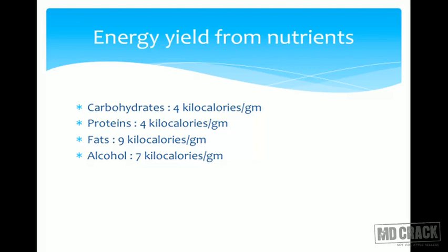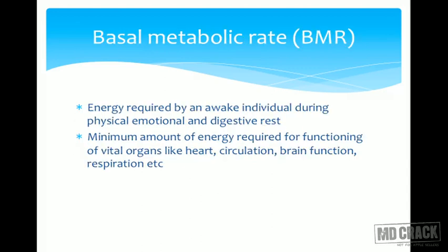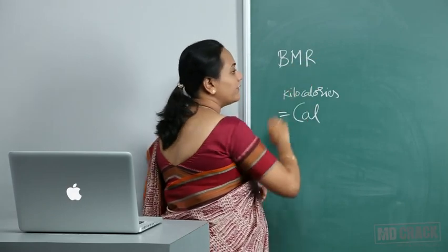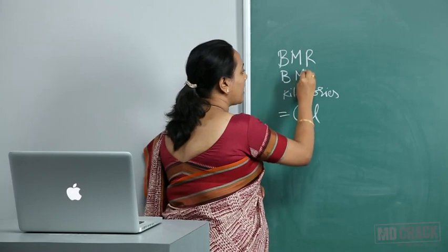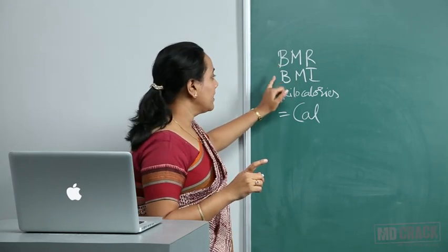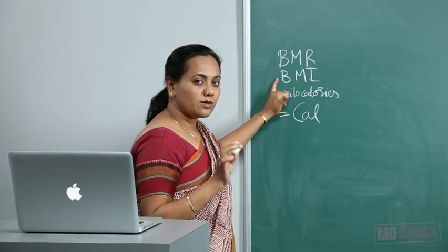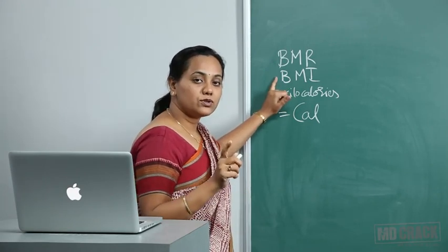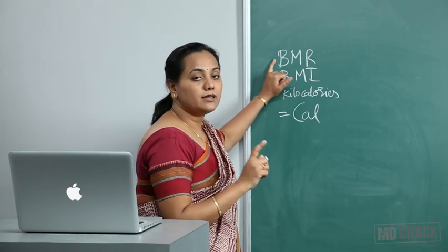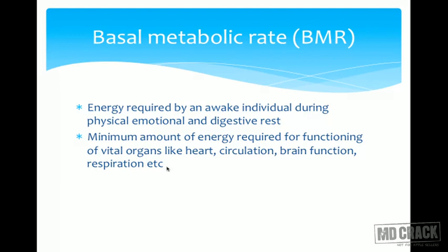That is the energy yield from these nutrients. Now, one of the most important concepts in nutrition is Basal Metabolic Rate, or BMR. Note that BMR is different from BMI — BMR stands for Basal Metabolic Rate, while BMI stands for Body Mass Index. BMR is the energy required by an awake individual at physical, emotional, and digestive rest.